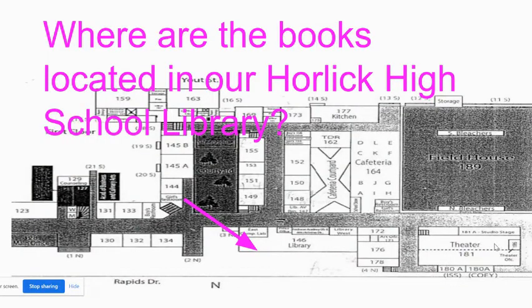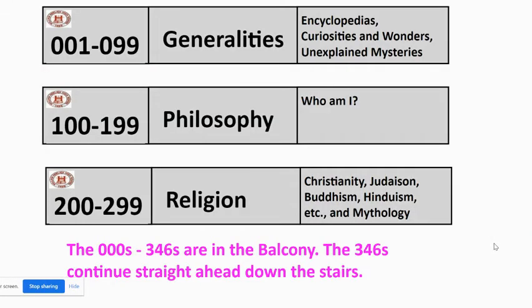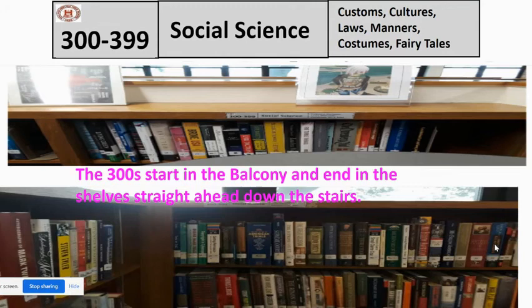Here's the map of our school — here's our library and where our books are located. The zeros to the 346s are up on the top in the balcony, far toward the west. The 346s go to the end of the balcony, and then you have to go down the steps straight ahead to find the rest of the 300s. There are some little numbers on the tops of the shelves that show you those numbers.